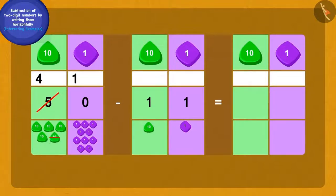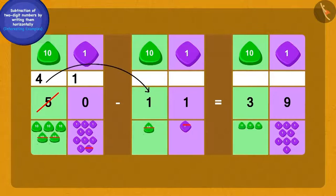Children, can you solve this further? Yes, we will subtract one ones from ten ones and we will get nine ones. And finally, if we remove one tens from four tens, we will get three tens.